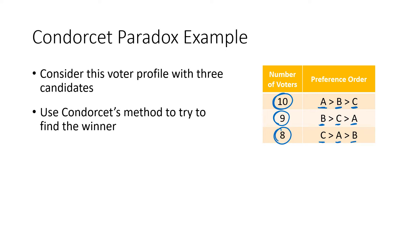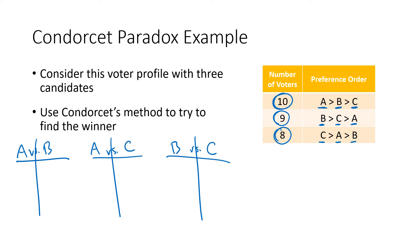Let's remember how we do the Condorcet Method. We look at all pairings of candidates against each other: A versus B, A versus C, and B versus C. For A versus B: the 10 voters at the top like A best, so they vote for A. The nine voters in the second row like B best, so they vote for B. The eight voters in the third row would like to vote for C, but since we're looking at A versus B, they vote for their second choice, which is A. That's eight more votes for A, so A wins this pair 18 to 9.